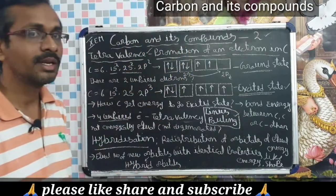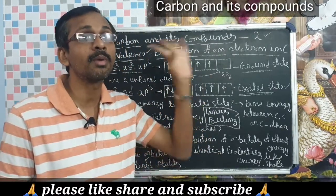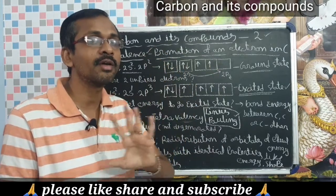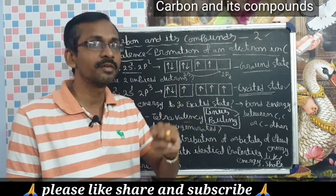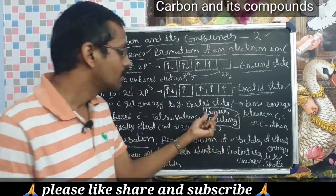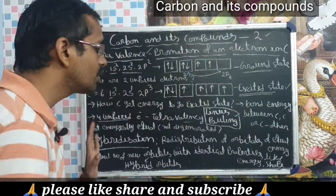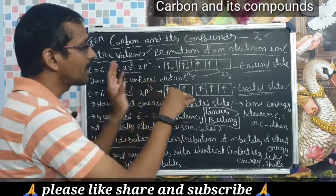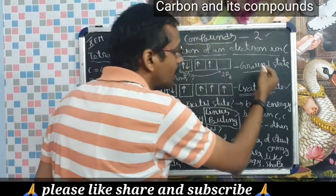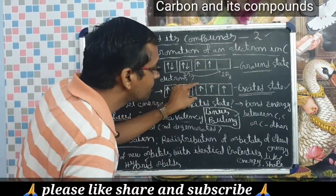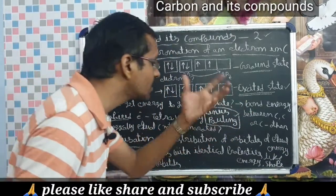There is a scientist named Linus Pauling. He got not shared two Nobel prizes — individual Nobel prizes in 1954 and 1962. Linus Pauling explained the promotion of electrons. When promotion of electrons occurs, another question is generated: the 2s orbital and 2p orbital have different energies. So the four unpaired electrons in their orbitals — 2s1, 2px1, 2py1, 2pz1 — are not energically equal; they are not degenerate orbitals.